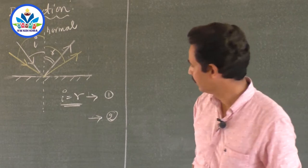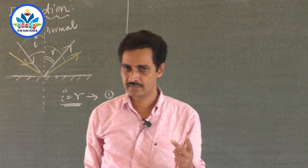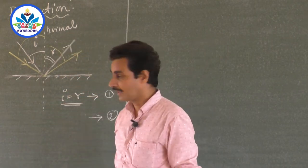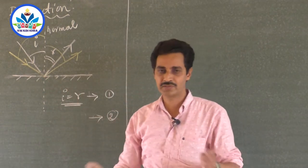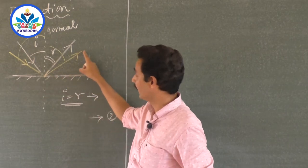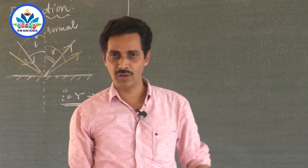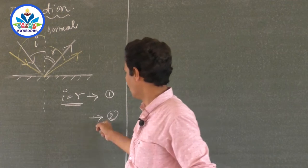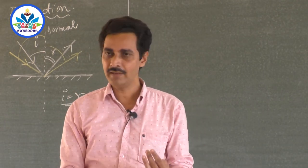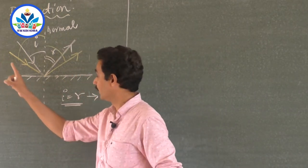The second law of reflection states that the incident ray, reflected ray, and the normal all lie in the same plane. A ray of light falling along the board will reflect along the board, and the normal will also be on the board — all three lines lie in the plane of the board. You cannot expect the reflected ray to go into a different plane.